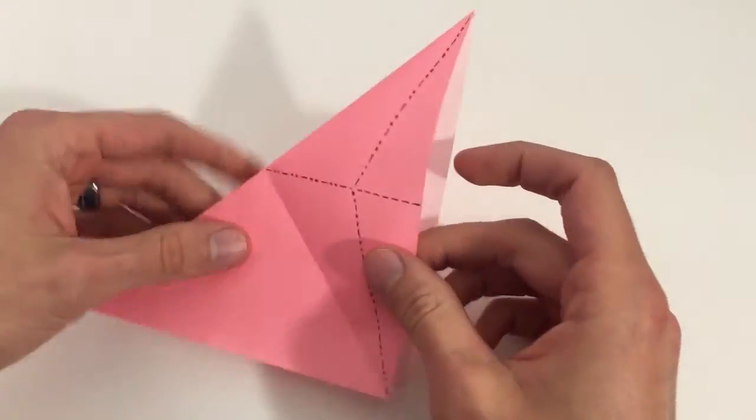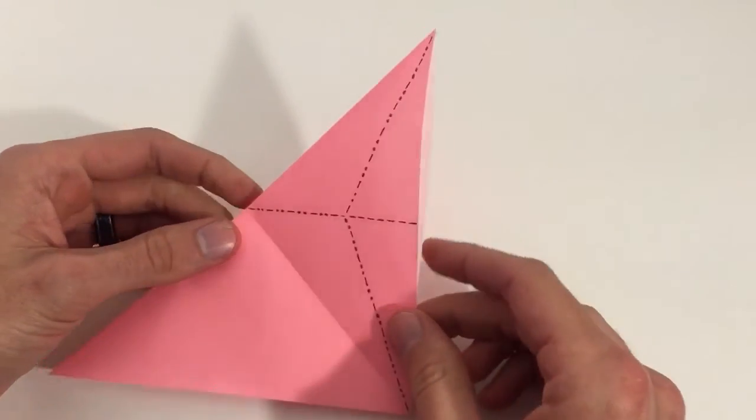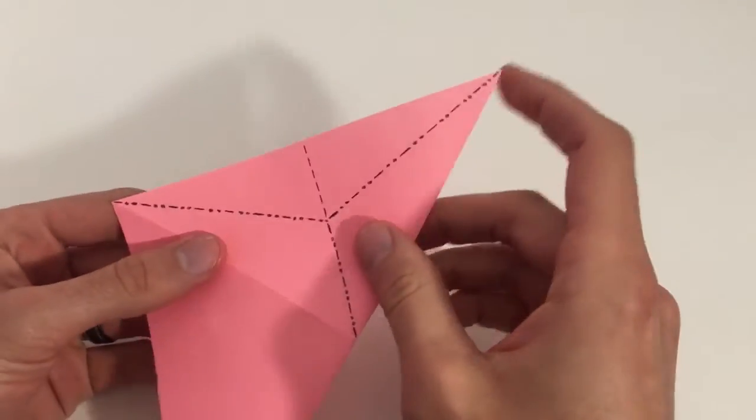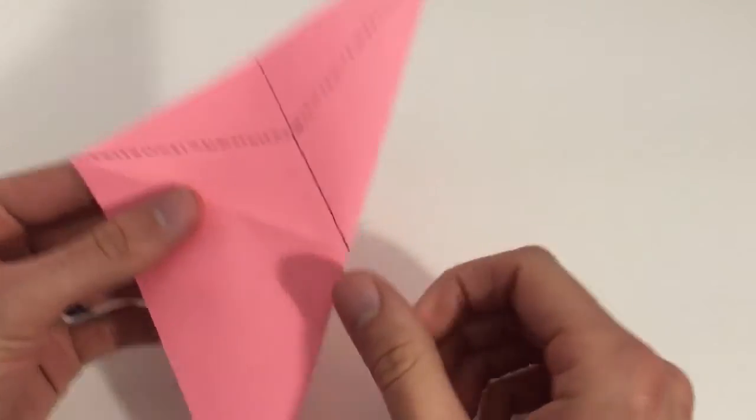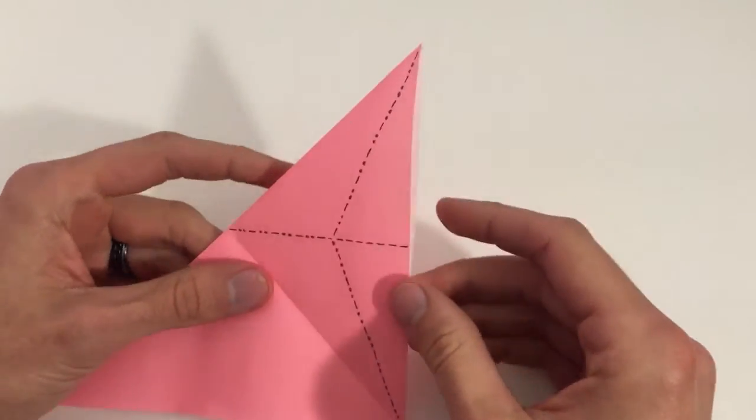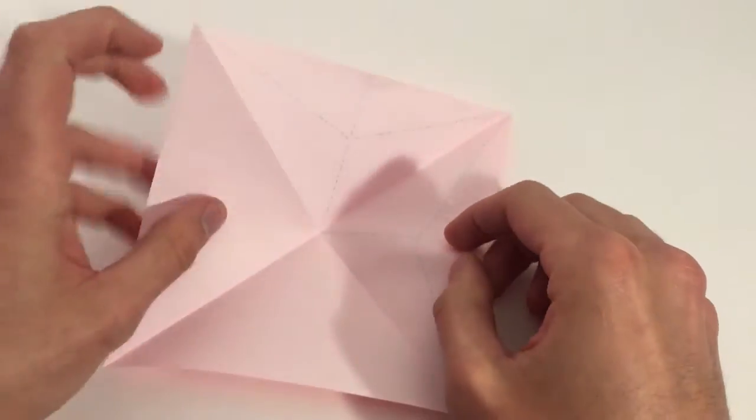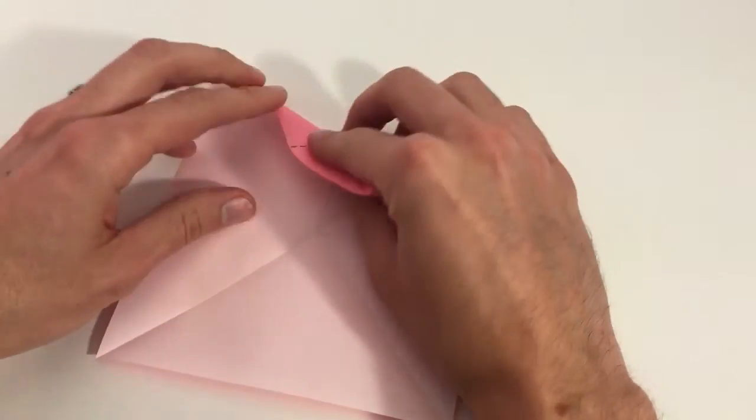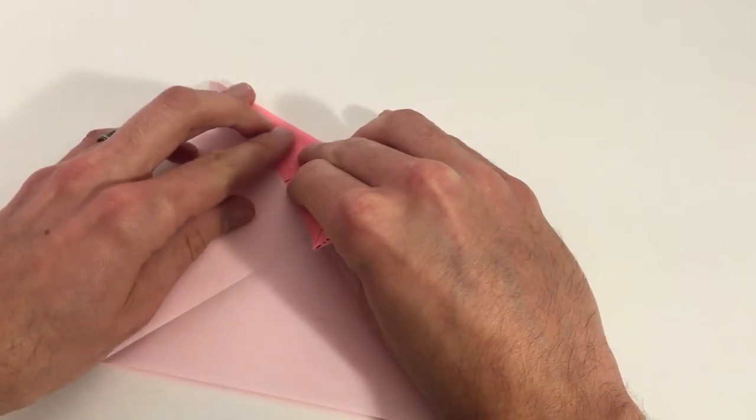For a double rabbit ear fold, it'll just look like this in a diagram. But you'll just imagine that it's the same thing on the other side. If it's a case like this, you can actually open it up all the way. It'll be a little easier to fold each of these first.